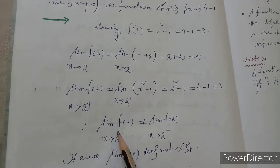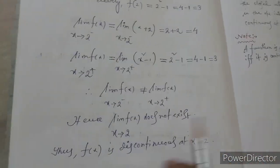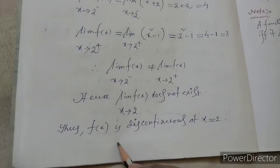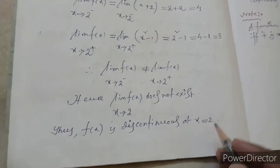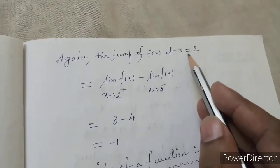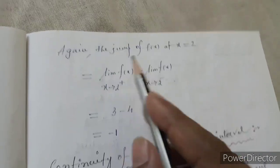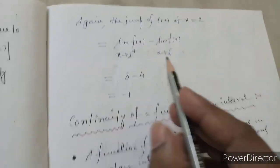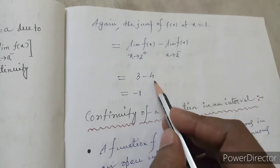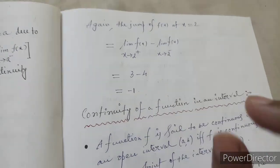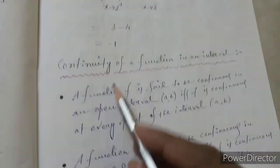Clearly, the left-hand limit is not equal to the right-hand limit, hence the limit of f(x) as x tends to 2 does not exist, which means f is discontinuous at x equal to 2. The jump of f(x) at x equal to 2 equals right-hand limit minus left-hand limit, that is 3 minus 4, which equals minus 1.